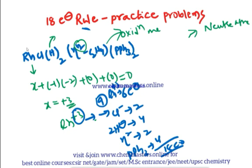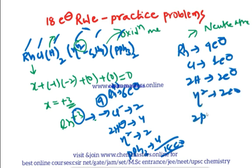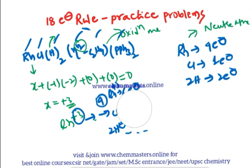Using the neutral atom method for the rhodium complex: neutral Rh contributes 9 electrons; neutral Cl contributes 1 electron; two neutral hydrogens contribute 2 electrons; η²-C₂H₄ contributes 2 electrons; two triphenylphosphine ligands contribute 4 electrons. Total: 9 + 1 + 2 + 2 + 4 = 18 electrons. Both methods give the same result, confirming the complex is stable under the 18-electron rule.